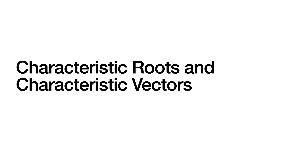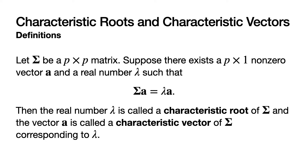Next we're going to define characteristic roots and characteristic vectors of a square matrix. Let CAP-SIG be a P by P matrix. Suppose there exists a P by one non-zero vector, which we'll denote by bold A, and a real number lambda — a scalar quantity — such that CAP-SIG times the vector A is equal to lambda times the vector A. If such a vector A and real number lambda exist for which that equality holds, then lambda is called a characteristic root of CAP-SIG and the vector A is called a characteristic vector of CAP-SIG corresponding to the characteristic root lambda.